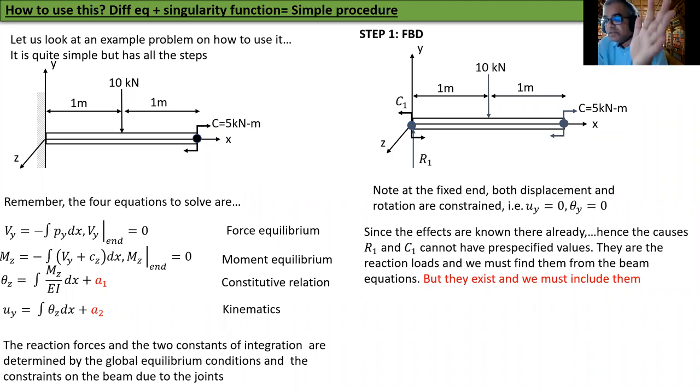At the fixed end, both displacement and rotation are constrained. That is, I know Ui equals zero and theta z equals zero. Hence, the causes R1 and C1 cannot have pre-specified values. They are the reaction loads and we must find them from the beam equilibrium equations. If I don't put them in the free body diagram, the assumption is R1 is zero, C1 is zero, which is not correct.